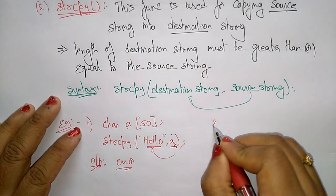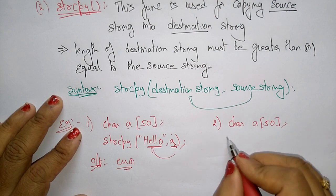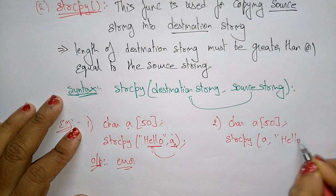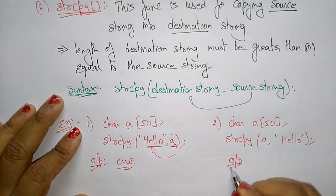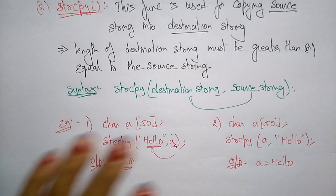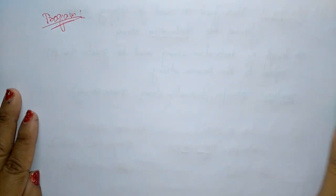Let's take another example: character a of size 50, strcpy(a, "hello"). Then the output will simply be a = "hello". So the left side should always be the destination and the right side should be the source string.